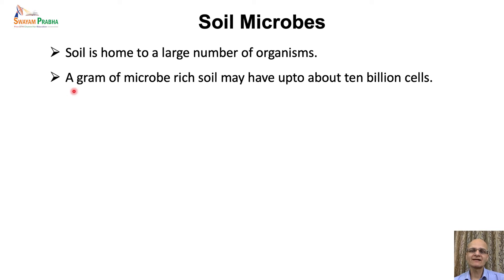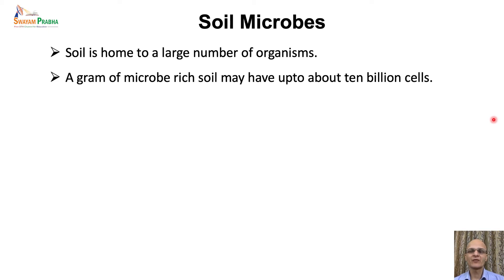If we just analyze a gram of soil, there can be up to 10 billion cells per gram. Certainly these will not all be the same — there will be a diverse range of different types of species. Though this is not universally applicable, the number of microbes varies at different locations depending upon the availability of nutrient resources in the soil and even the type of soil. We are talking specifically about the soil in the rhizosphere — the close vicinity of the roots — which is nutrient rich, as are organic matter-rich soils, which also have very high densities of microbes.